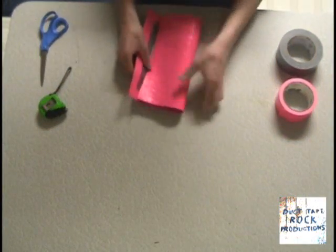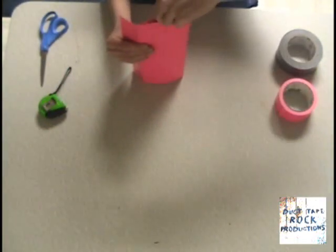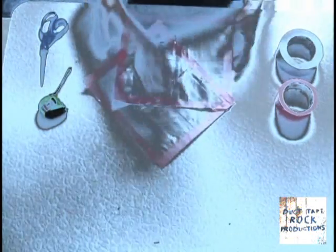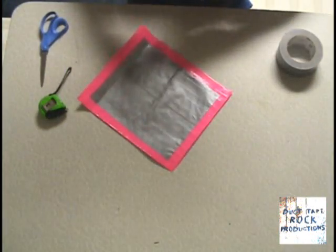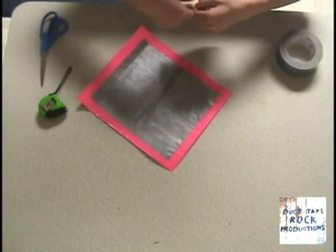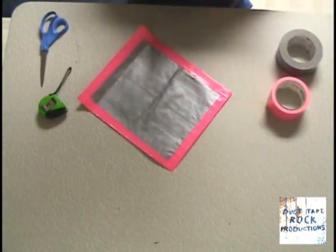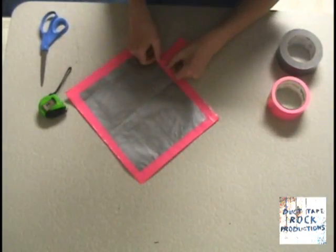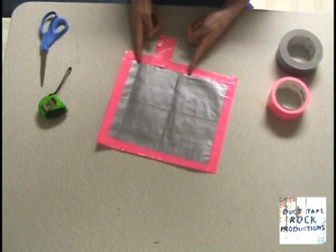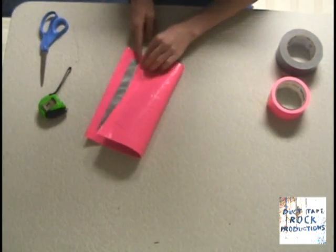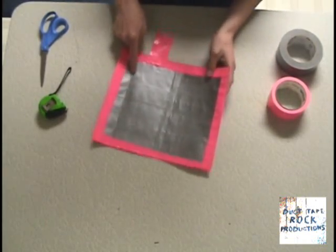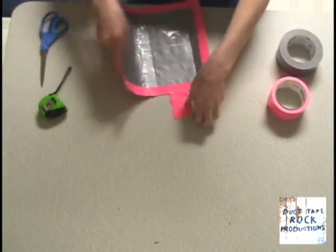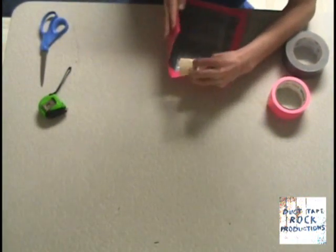Now the only thing left to do is to cover these ends. How we are going to do this is take a piece of duct tape around three to four inches, place it directly in the middle of these two creases, and line it up with your trimming. Fold over like so and put your duct tape on the other end like that.